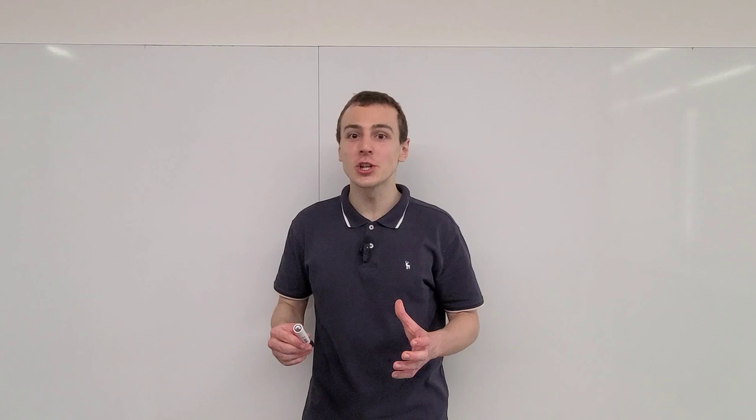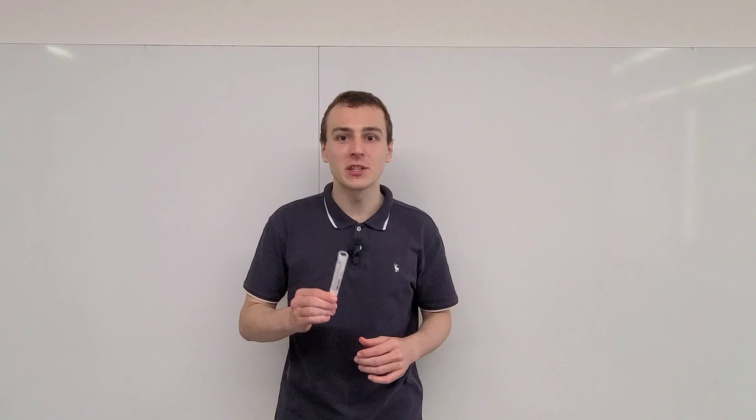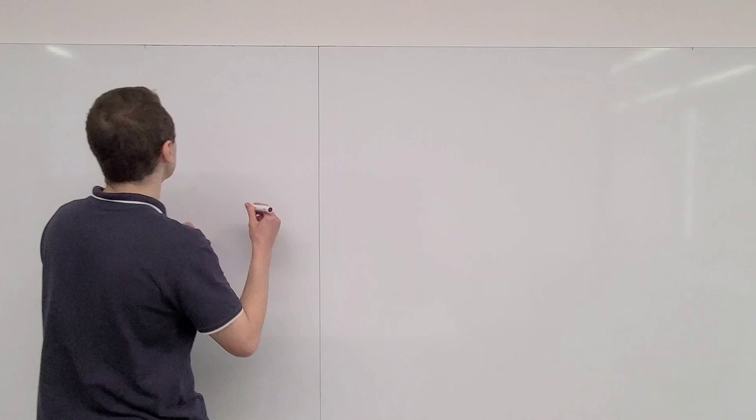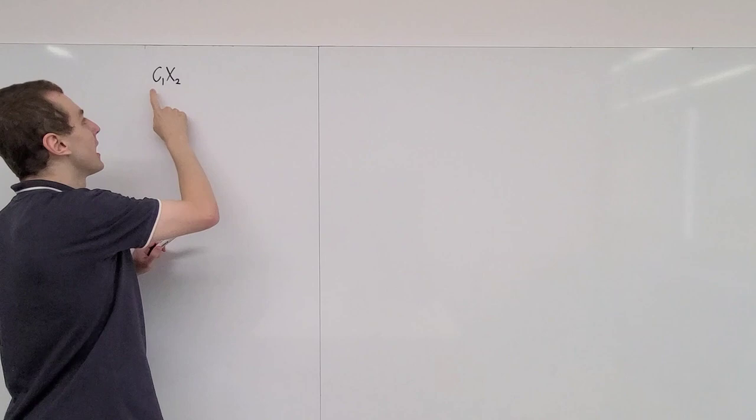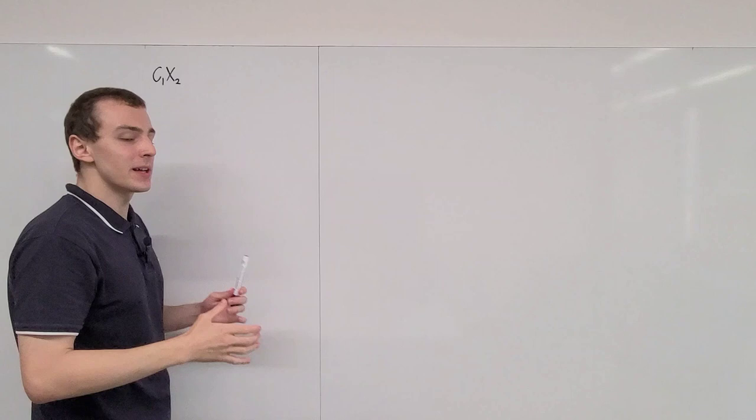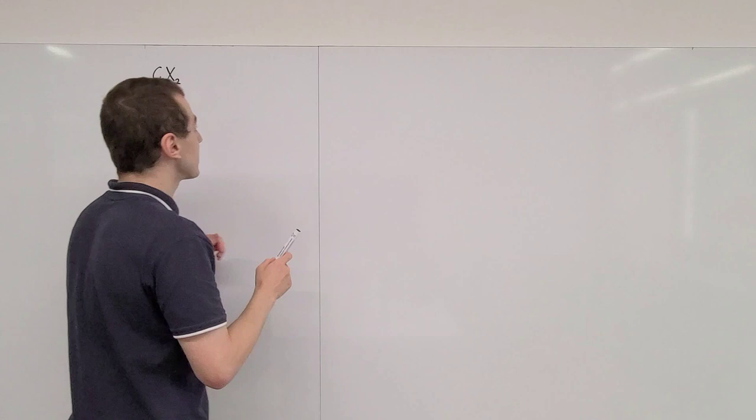Let's express two-qubit gates as linear combinations of Pauli matrix tensor products. We'll begin with the controlled NOT gate. I'm going to use the notation C1X2, which tells us that qubit 1 is acting as the control qubit and qubit 2 is acting as the target qubit. It is important that we specify which of the two qubits is the target and which is the control.